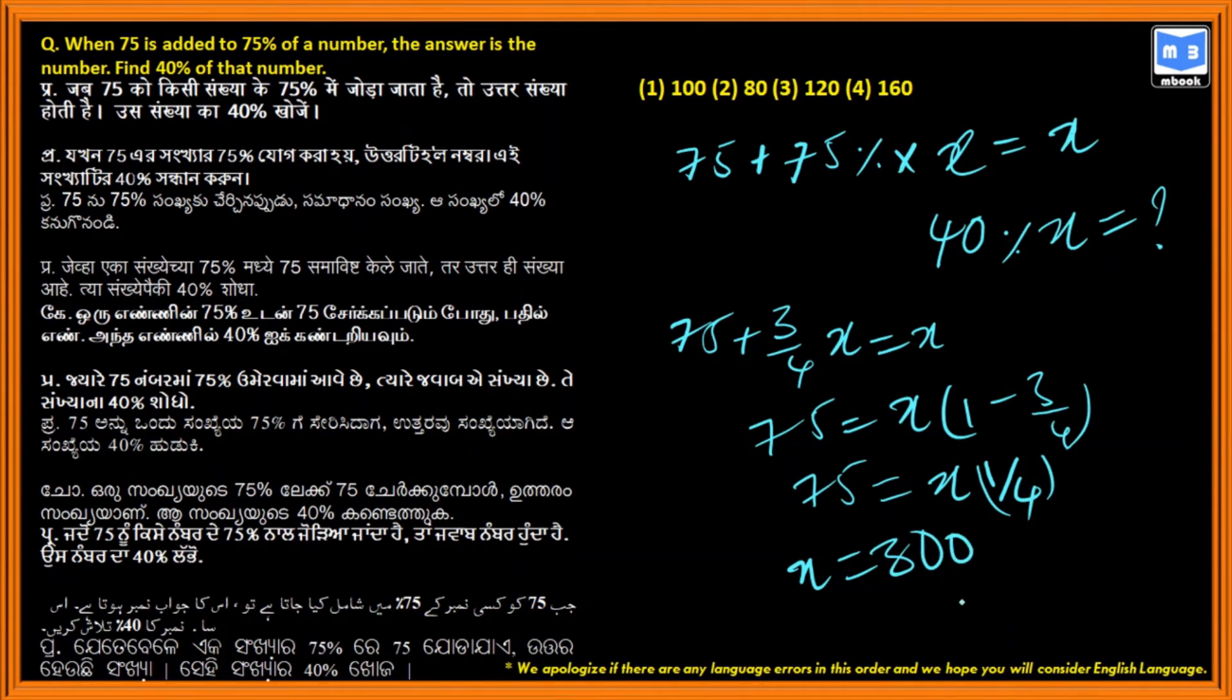40 percentage of X means 40 percentage of 300. 40 percentage you can write it as 2 by 5 of 300 equals 120. 120 is the answer.